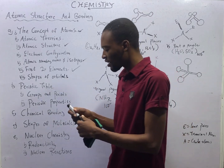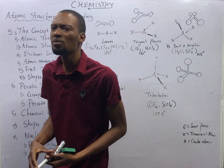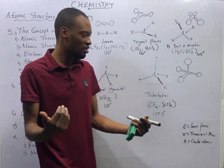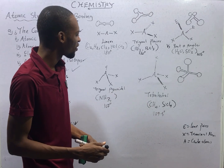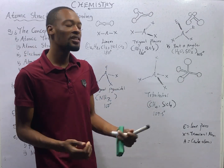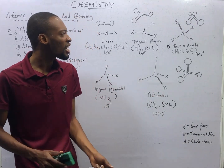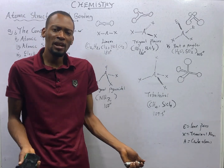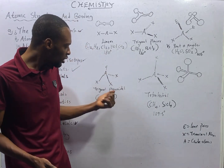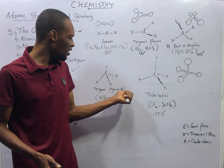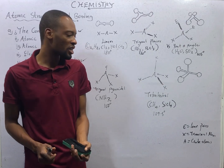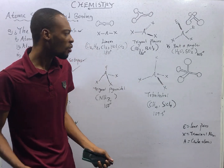We said that atoms exist as molecules, and these molecules have different shapes. A molecule can be linear. A molecule can be trigonal planar. A molecule can have a V-shape, bent, or angular shape. A molecule can have a trigonal pyramidal shape. A molecule can have a tetrahedral shape.